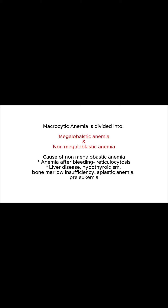Macrocytic anemia is divided into megaloblastic anemia and non-megaloblastic anemia. Causes of non-megaloblastic anemia include anemia after bleeding, reticulocytosis, liver disease, hypothyroidism, bone marrow insufficiency, aplastic anemia, and pre-leukemia.